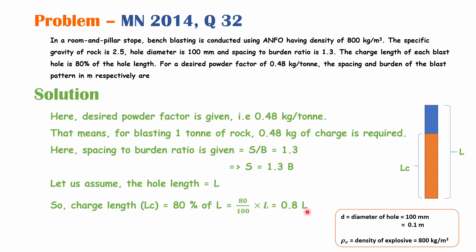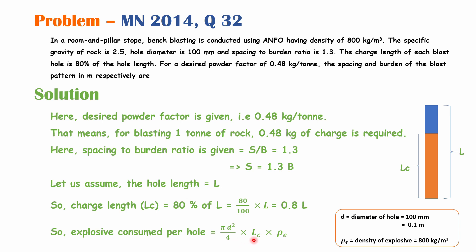Explosive consumed per hole equals (π·D²/4) × LC × ρ_explosive. Since holes are drilled in a circular shape, π·D²/4 is the area of the hole. Multiplying the area by the charge length LC gives the volume of the cylindrical charge column, and multiplying by the density of the explosive gives the kilograms of explosive consumed per hole.